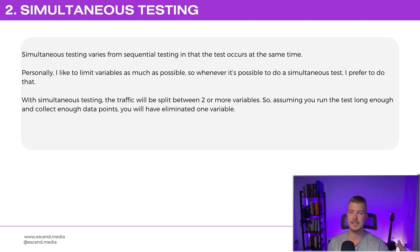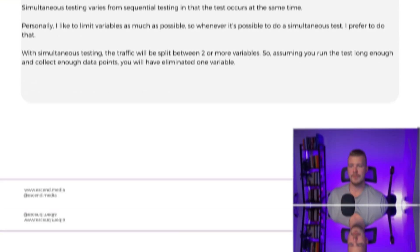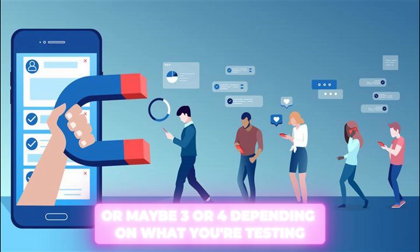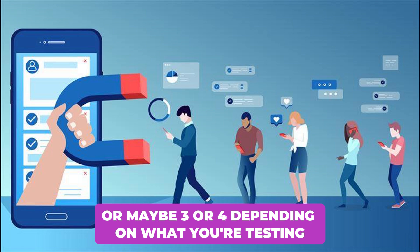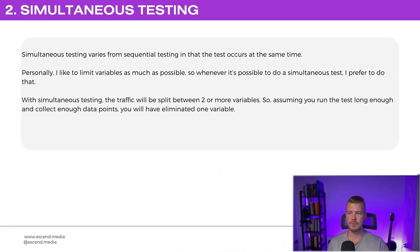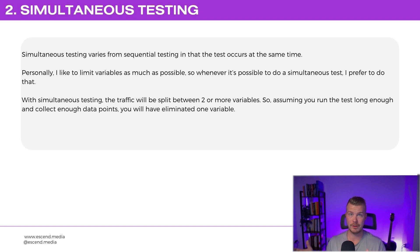With simultaneous split testing, traffic is split between two, three, or four different variables depending on what you're testing. Assuming you run the test long enough and collect enough data points, you've eliminated the variable that could skew the results you're getting.